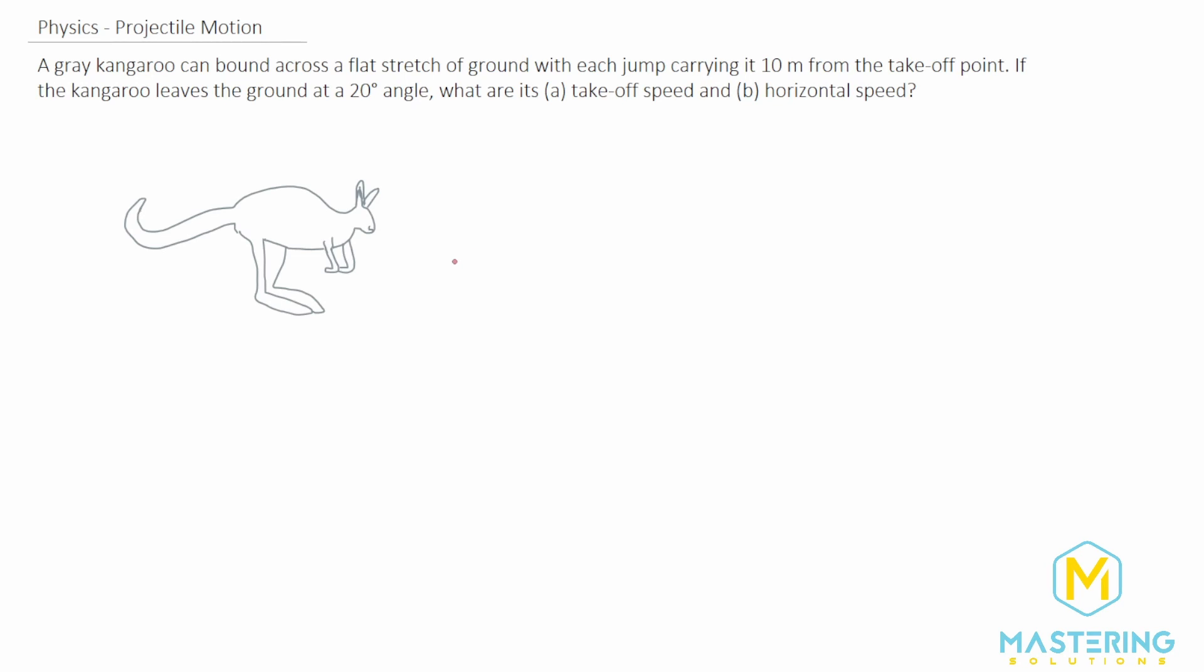Welcome to Mastering Solutions. This is a projectile motion problem where they tell us that a gray kangaroo can bound across a flat stretch of ground with each jump carrying it 10 meters from the takeoff point. If the kangaroo leaves the ground at 20 degrees, what are the takeoff speed and the horizontal speed?